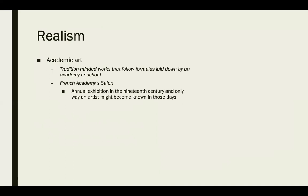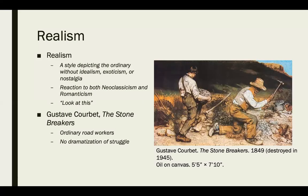Realism is another ism — it's the academic art form of tradition-minded works following formulas laid down by an academy or school. The French Academy Salon was an annual 19th-century exhibition, and the only way an artist could become known was by having their work accepted there. Realism depicts ordinary life without idealism, exoticism, or nostalgia — it's a reaction to both neoclassicism and romanticism, wanting to highlight very average, ordinary scenes without over-dramatizing them.